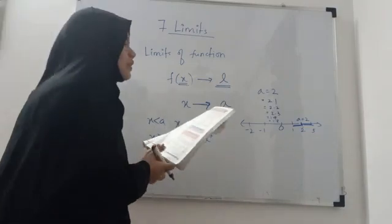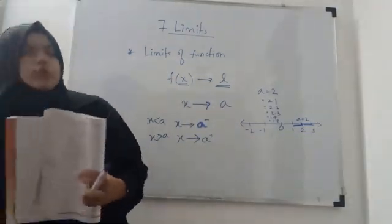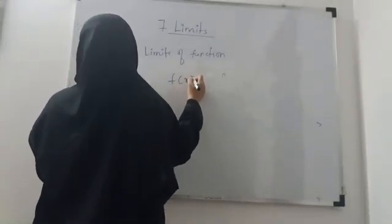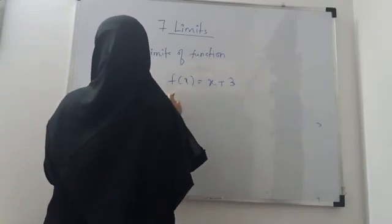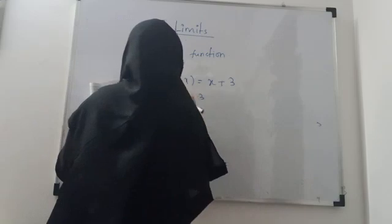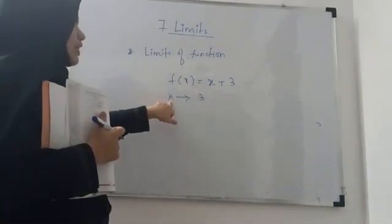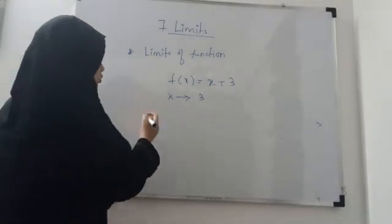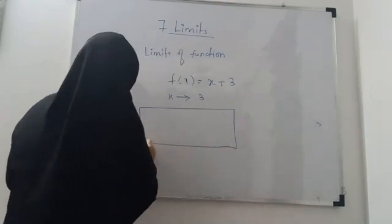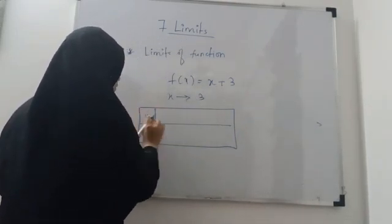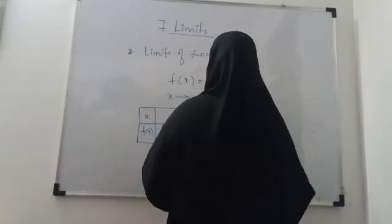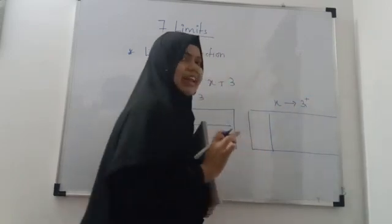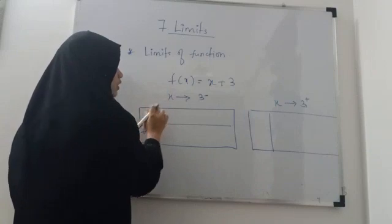We will take one example: f(x) = x + 3. We will take the value of x very close to 3, so x approaches 3. We have to take values closer and closer to 3 but not exactly equal to 3. We will make two tables for the lower values and upper values — these are the values of x and the corresponding values of f(x). Here, 3-plus means all values greater than 3, and here all values less than 3.